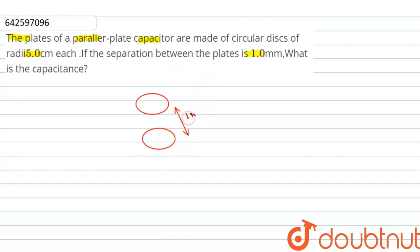This is 1 mm distance and both are connected with potential. The radius of both disks is equal to 5 cm.